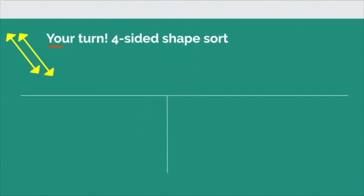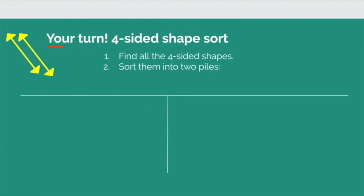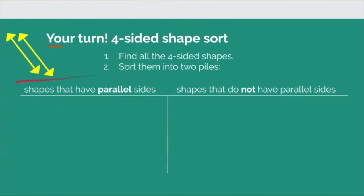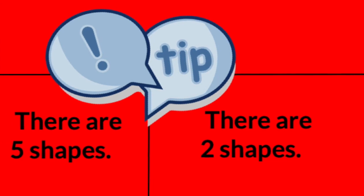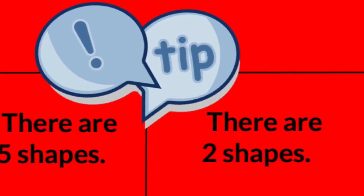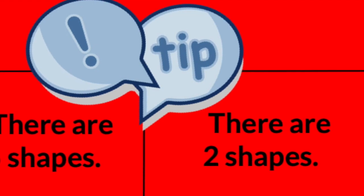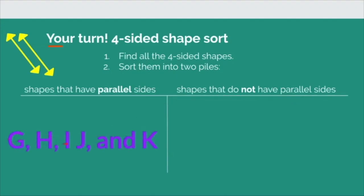Now it's your turn. Grab your shapes and figure out which ones have four sides — all your quadrilaterals — and sort them into two piles: shapes that have parallel sides, and shapes that do not have parallel sides. Press pause and press play when you're ready. If you found shapes G, H, I, J, and K, those are shapes that have parallel sides. The shapes that do not have parallel sides are shapes D and L.